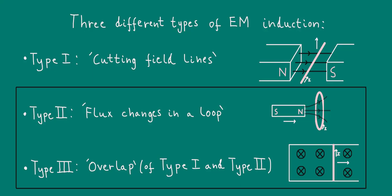Type 1, the cutting of field lines, which is of course what we've been discussing in this video, doesn't have anything to do with changes in magnetic flux.